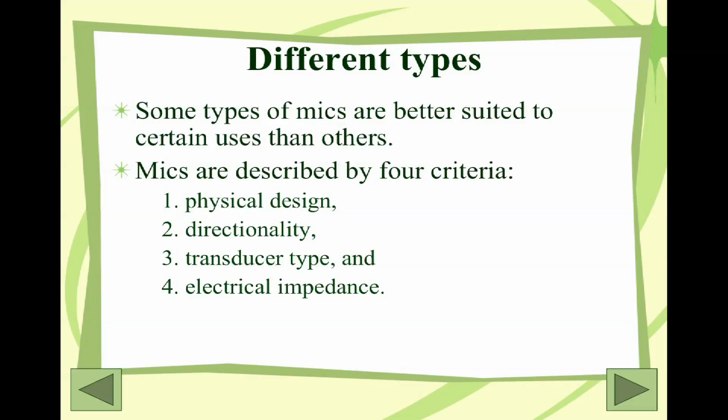The first is physical design — what its actual shape is. The second is directionality — that's which way it receives the sound waves. There's also the transducer type, which is how it actually converts that sound wave and changes it into an electrical signal. And then there's electrical impedance, which we'll get into a little bit more later because it's technical.